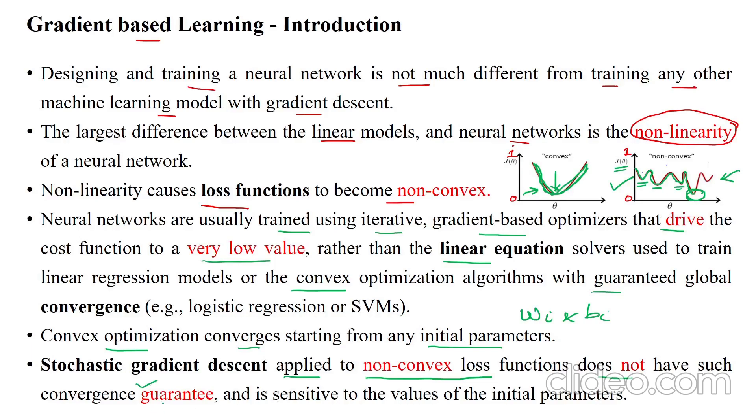That means it is not guaranteed to reach the global minimum value because it is sensitive to the values initializing the parameters wi and bi.